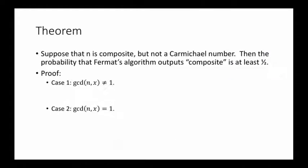However, it turns out that the test works well if n is not a Carmichael number. Here's a theorem. The theorem says that if n is composite but not a Carmichael number, then the probability that Fermat's algorithm outputs composite is at least 1/2. And as we've seen before, we can always boost this success probability arbitrarily close to 1 by repetition.